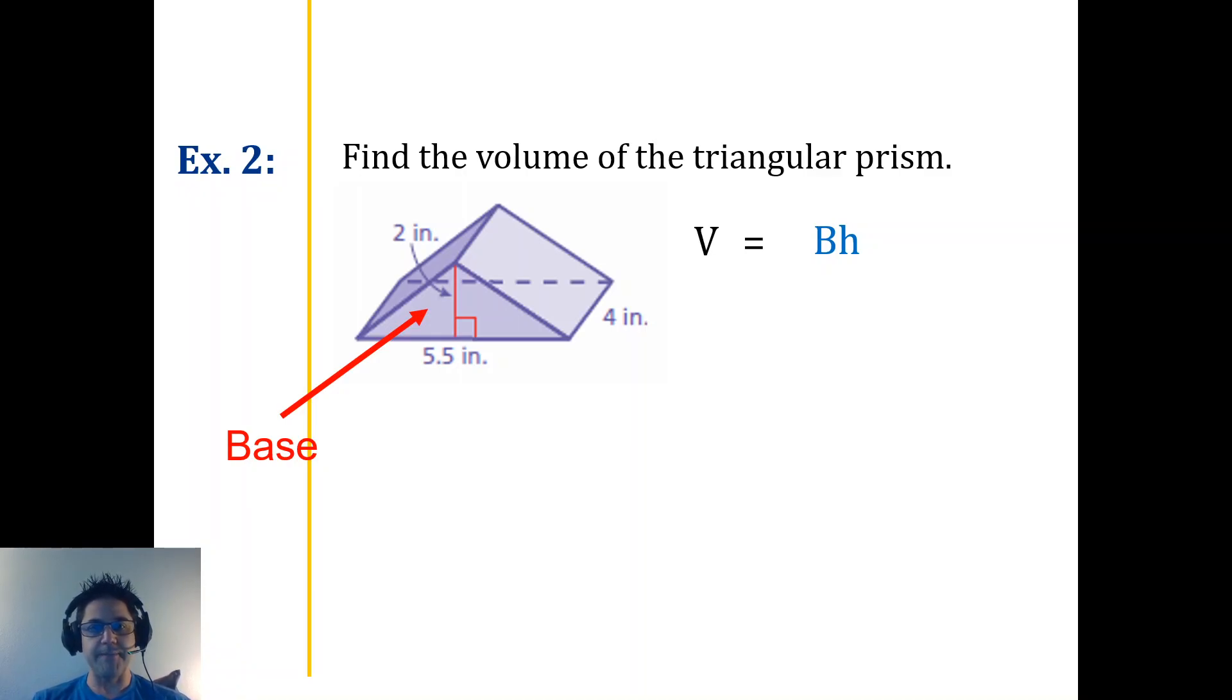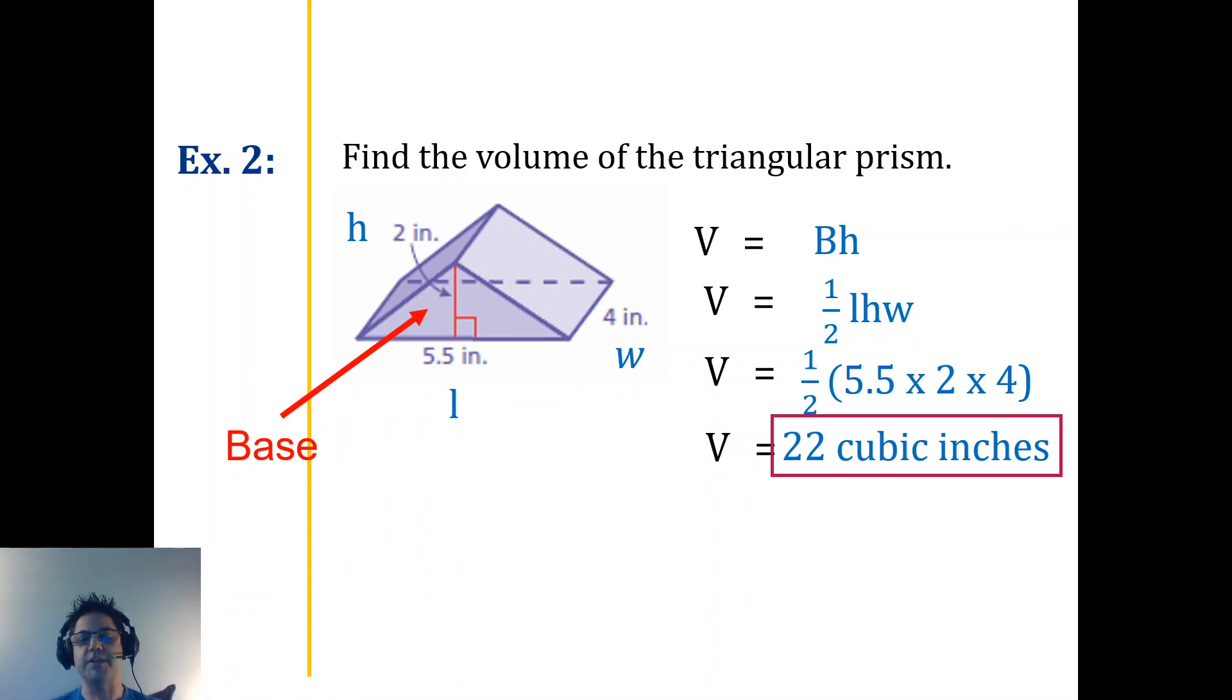So that's the base there that we just talked about, so length times width times height. And to be honest, it really doesn't matter where you really place your letters for the length, width, and height—you're just identifying which one works for you. But remember, sometimes we might be a little bit more challenging and we might give you a slant height, which is this number right here. That would not be used, so make sure you're aware of where the numbers go. So we just multiply it, so maybe you want to do 5.5 times 2 times 4 and then divide by 2, because again we've got the half here. So half of it gives you 22 cubic inches.